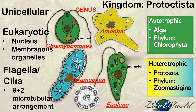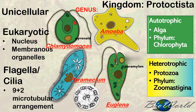Members of phylum zoomastigena are actually parasitic microorganisms like Trichonimpha or Trypanosoma. The amoeba is categorized in a phylum called phylum protozoa, which is not in our syllabus, and paramecium is in a phylum called ciliophora, which is also not in our syllabus. Now since phylum chlorophyta can be autotrophic, why are they not classified into kingdom plantae? Let's have a look.